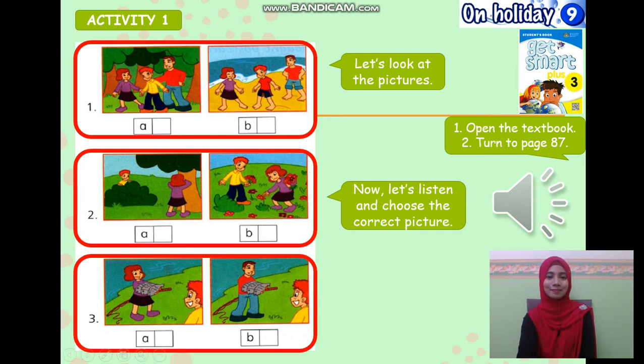Activity three. Listen and tick. What did the children do? One. On Saturday, Bob and I went to the forest. It was great. Two. We had so much fun. We picked flowers and swam in the river. Three. I caught three fish and my dad cooked them. They were yummy.